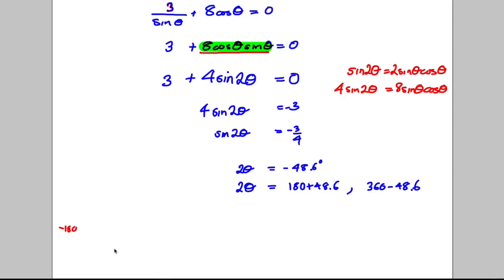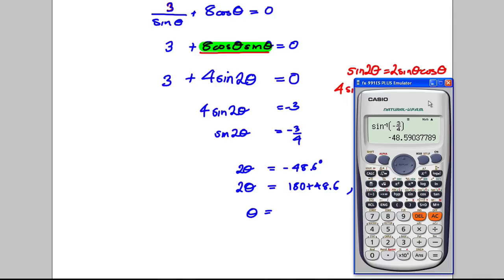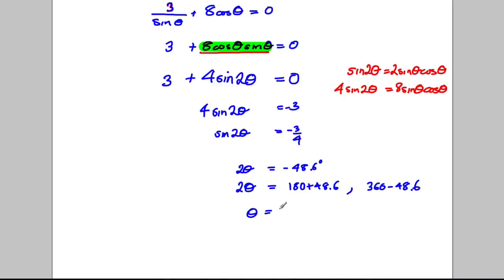So they are our 2θ values. And let's write down what they are. So write down what θ is there. So 2θ is this. So a single θ, we do 180 plus 48.6 equals and then divide it by 2. And we get 114.3 degrees for that one.